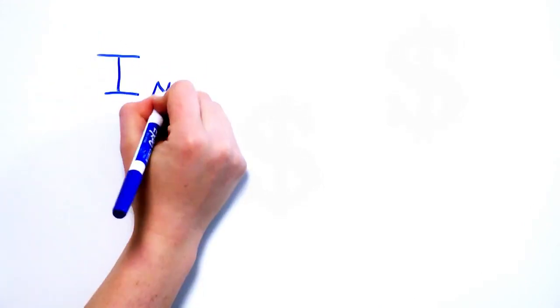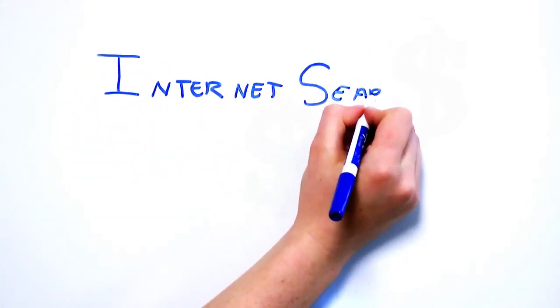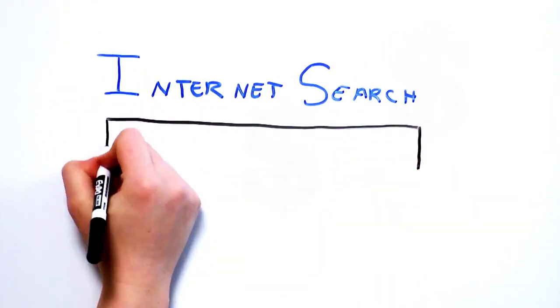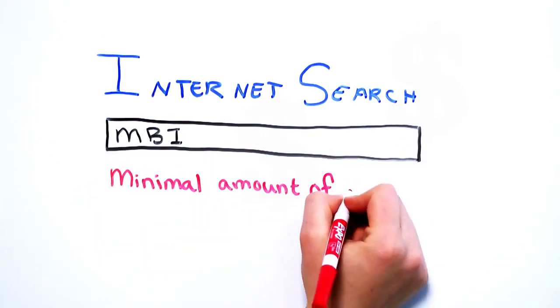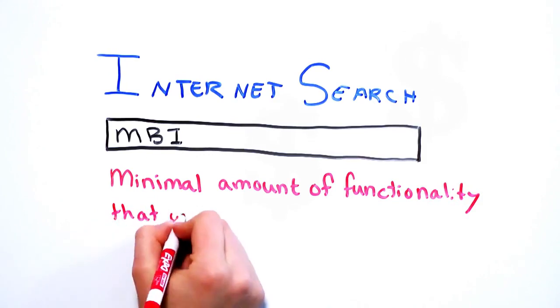According to my internet search, an MBI is the minimal amount of functionality that will bring value to the business. That sounds similar to an MVF, but the focus on business value is powerful.